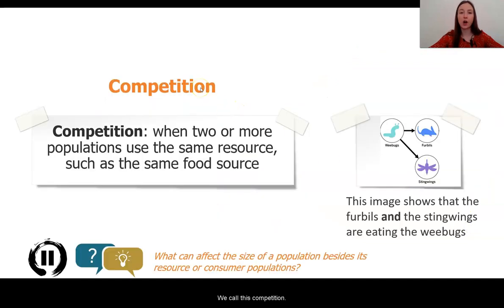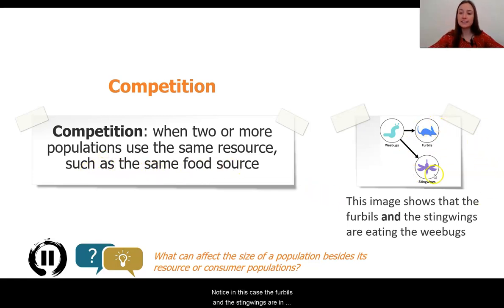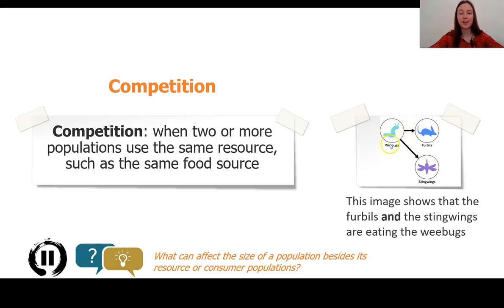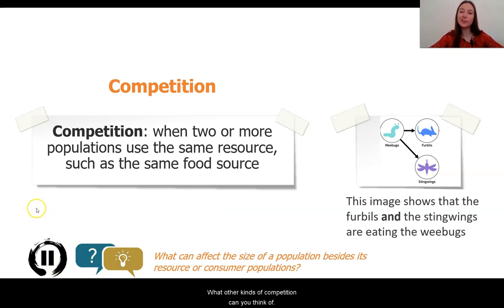I also noticed another type of relationship. The stingwings have the same resource population as the furballs. This is something we haven't seen yet before in our studies. We call this competition. Competition is when two or more populations use the same resource, such as the same food source. Notice, in this case, the furballs and the stingwings are in competition, or competing for, their resource population of the wee bugs. I want you to pause the video for a moment and check in with someone — what other kinds of competition can you think of?